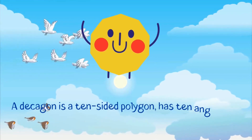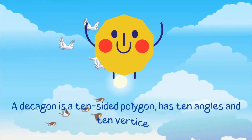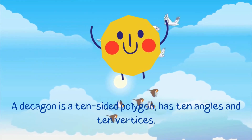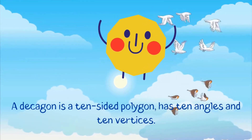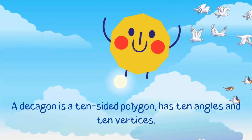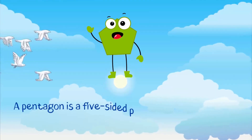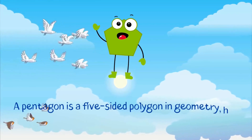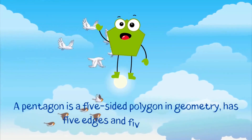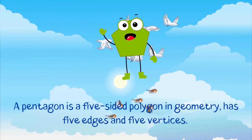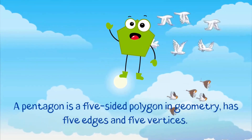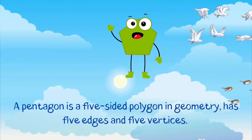A decagon is a ten-sided polygon, and has ten angles and ten vertices. A pentagon is a five-sided polygon in geometry, and has five edges and five vertices.